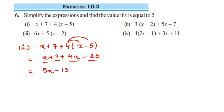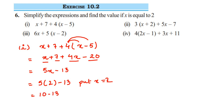So we got 5x minus 13. Now substitute x equal to 2. So this is 5 into 2 minus 13, which becomes 10 minus 13. We subtract them: 13 minus 10 is 3, and since 13 is greater and its sign is negative, we get minus 3. That was the first question.